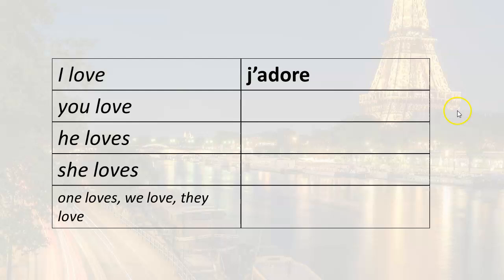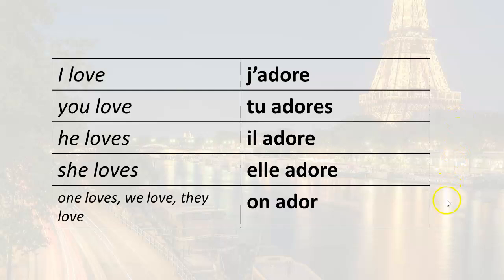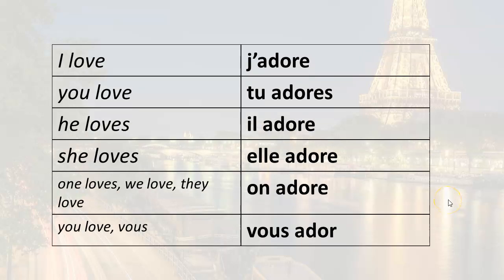J'adore. You love, this is the informal you. Tu adores. He loves, il adore. She loves, elle adore. And one loves, we love, they love. On adore. And finally, vous, vous adorez.